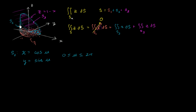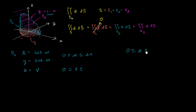The z value can take on a range of values but always has to be below the plane. We introduce a second parameter v, where z equals v, and v is always greater than or equal to 0. But the upper bound isn't constant — z has a variable roof: v is less than or equal to 1 minus x, which is 1 minus cosine u. Now we have our full parametrization and are ready to evaluate the surface integral.